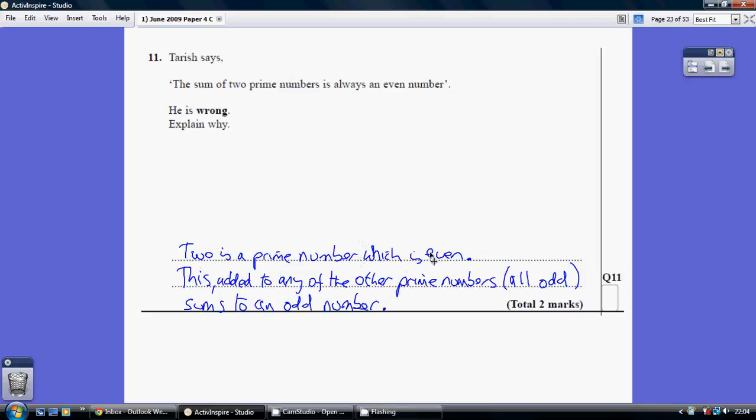Two is a prime number which is even. So why is Tarish wrong? Well, he has forgotten that two is an even prime number, and an even added to an odd is an odd.